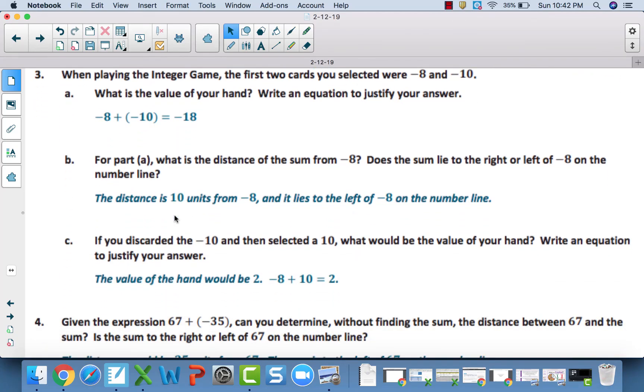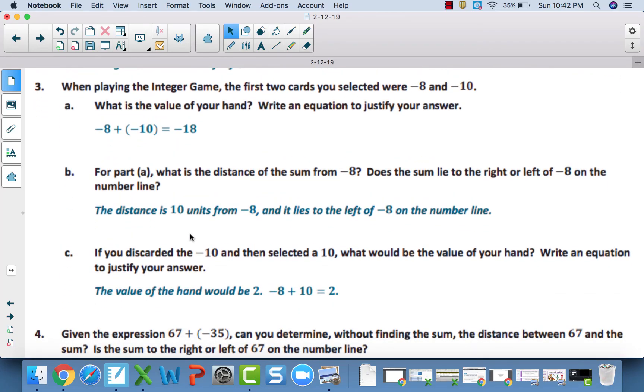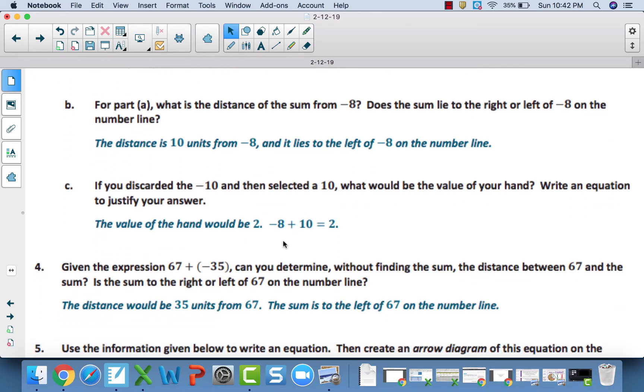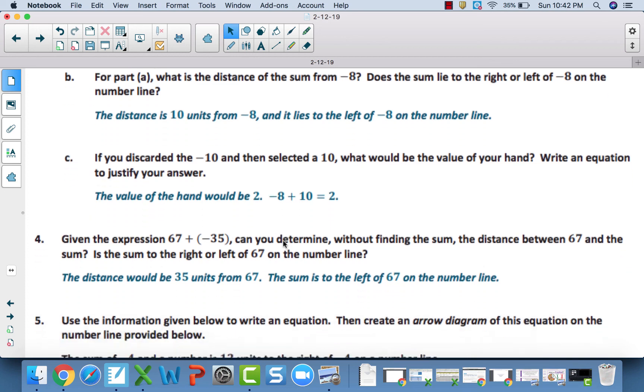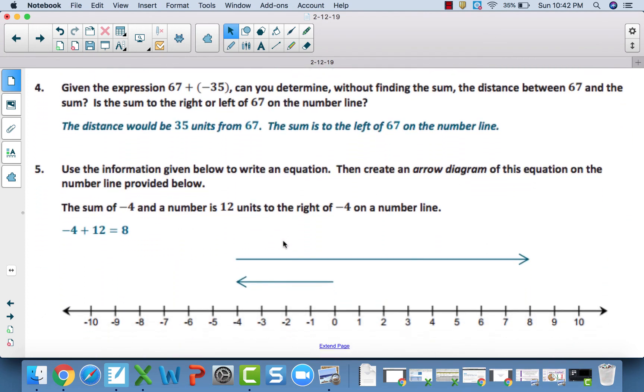3A, you should have gotten negative 18. 3B, the distance is 10 units from negative 8 and would be to the left of negative 8. C, the value of the hand should end up being 2 because negative 8 plus 10 is 2. Number 4, the distance would be 35 units from 67. Specifically, it would be 35 units to the left of 67 because that Q, that second add-in is negative.